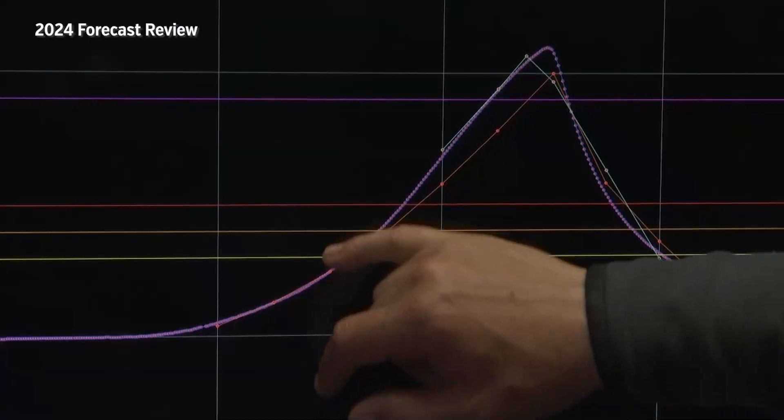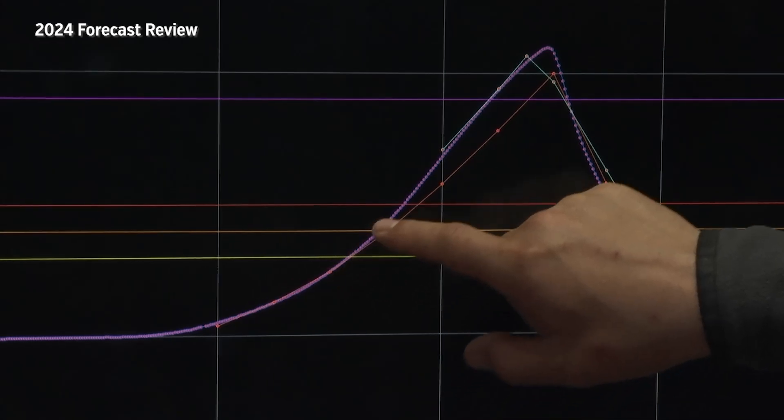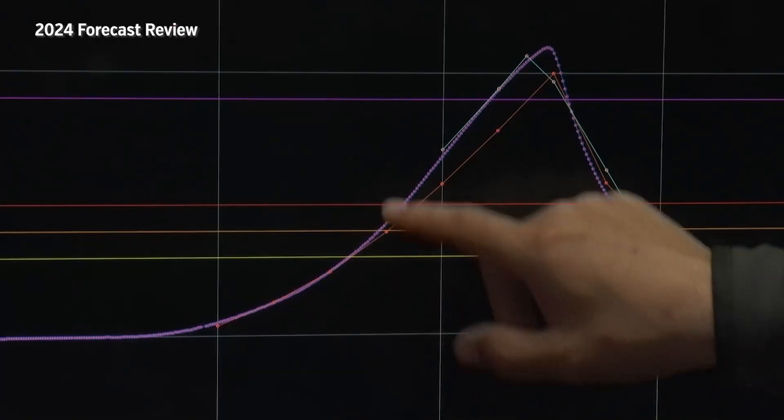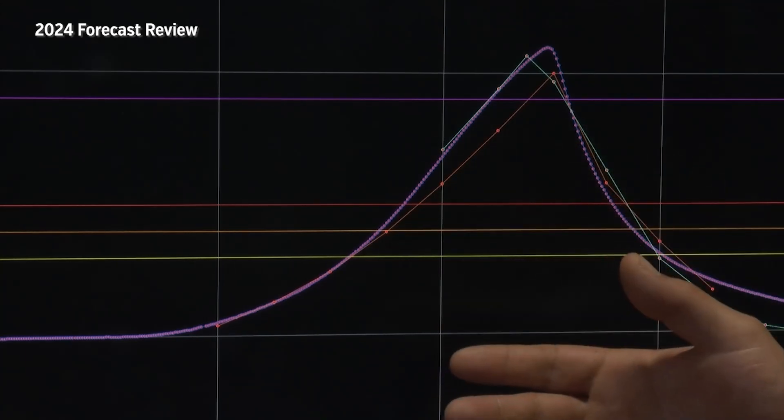But you can start seeing this deviation between the real-time observations, these blue and red lines or dots, and this orange line. You can start seeing this deviation between the blue line and the orange line, and the orange line again is our forecast that we put out.